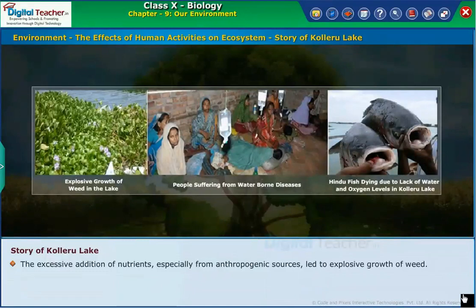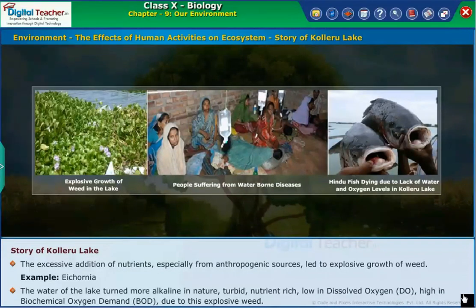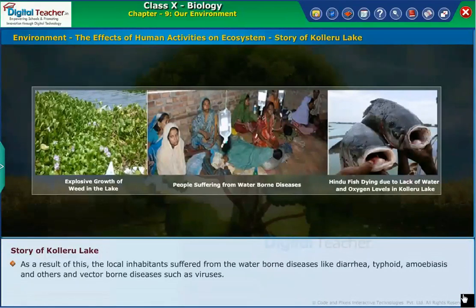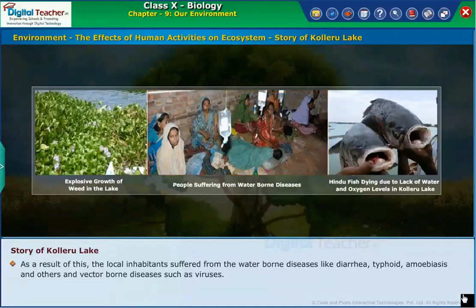The excessive addition of nutrients, especially from anthropogenic sources, led to explosive growth of weeds, for example, Eichhornia. The water of the lake turned more alkaline, turbid, nutrient rich, and low in dissolved oxygen (DO), with high biochemical oxygen demand (BOD) due to this explosive weed growth. As a result, local inhabitants suffered from waterborne diseases like diarrhea, typhoid, amoebiasis and others, as well as vector-borne diseases.